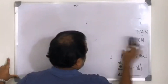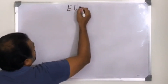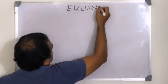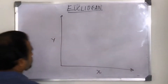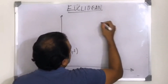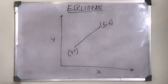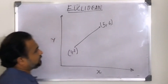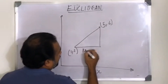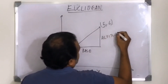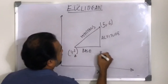Let me quickly put Euclidean on the chart with an example and then move to Manhattan before we close the video. To explain Euclidean distance, let me put a coordinate space with x and y axes. I have a point at (1, 2) and another at (5, 6). I want to calculate the distance between these two points.